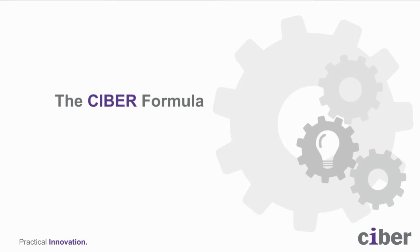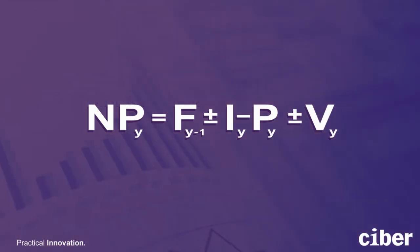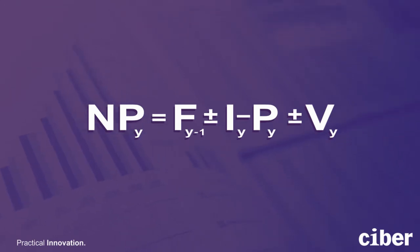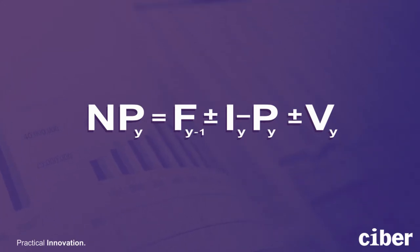But first, what is the Cyber formula? The Cyber formula represents the dimensions or vectors that can be used, measured and benchmarked to determine a forecast for the following year. The formula is: next year's plan (NP) for year Y is equal to the latest forecast for the year minus 1, plus or minus the impacts of inflation (I),